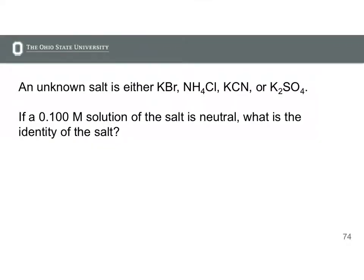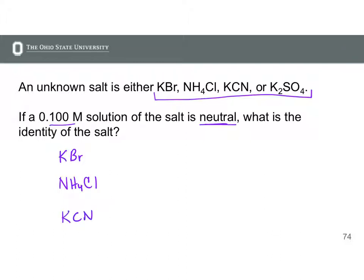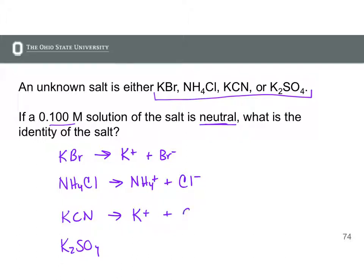In this problem, we're told we have four different options for an unknown salt, and we place 0.1 molar of that salt into water, ending up with a neutral pH. We want to figure out the identity of the salt. We consider all the ions formed: potassium bromide gives K+ and Br-; ammonium chloride gives NH4+ and Cl-; potassium cyanide gives K+ and CN-; and potassium sulfate gives 2K+ plus SO4²-.